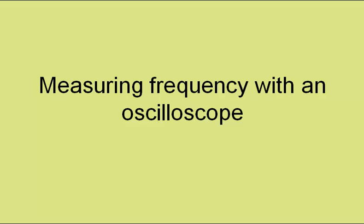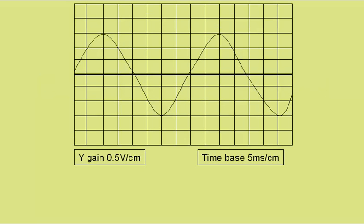Measuring the frequency of a sound using a cathode ray oscilloscope. If we attach a microphone to a cathode ray oscilloscope and the microphone picks up a pure note, it would give a trace something like this — a sine wave.